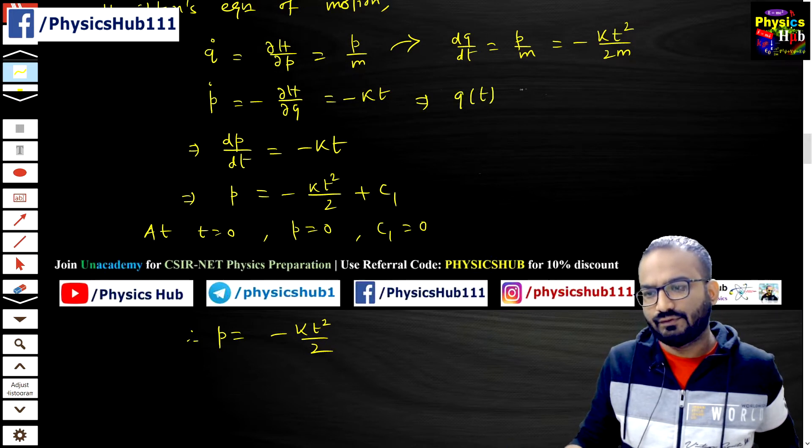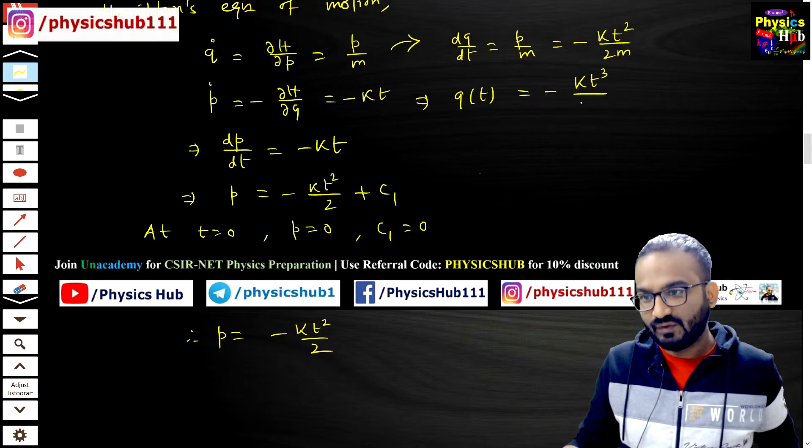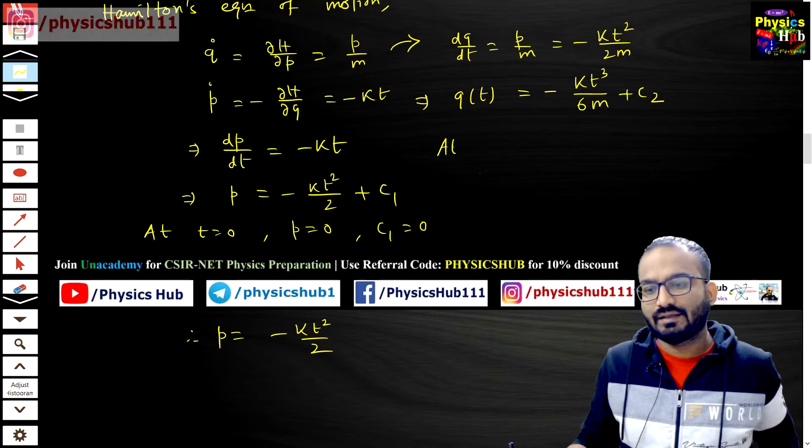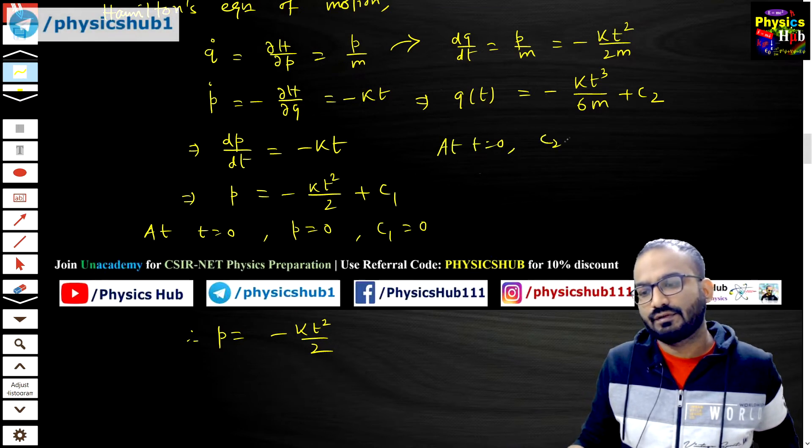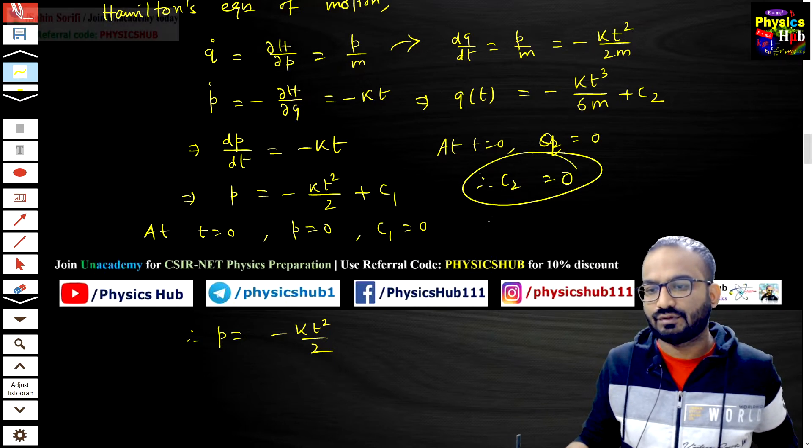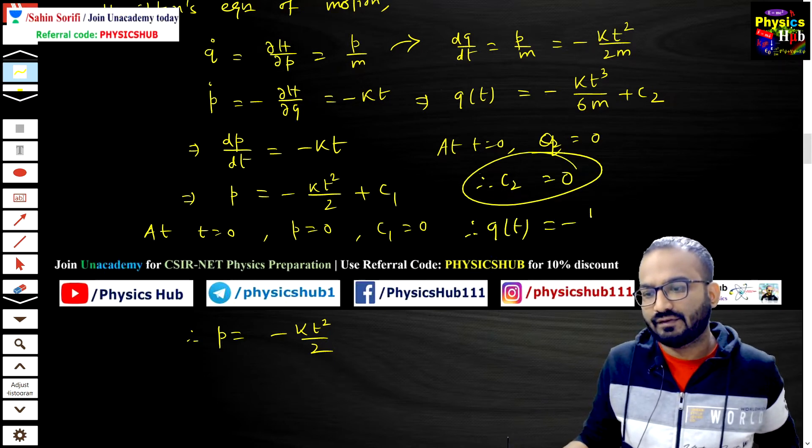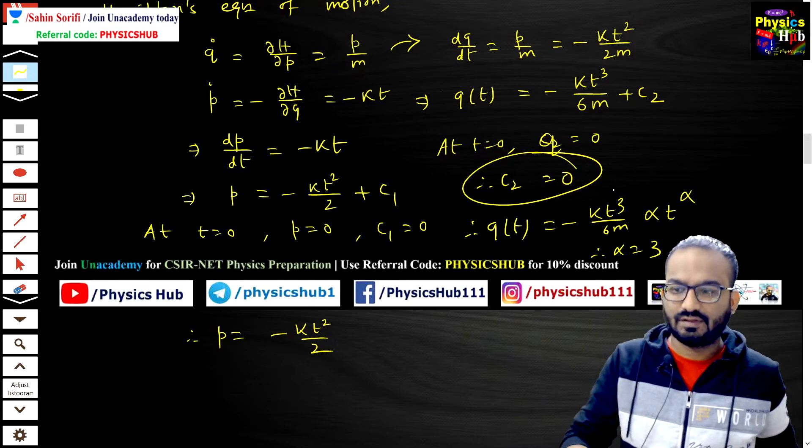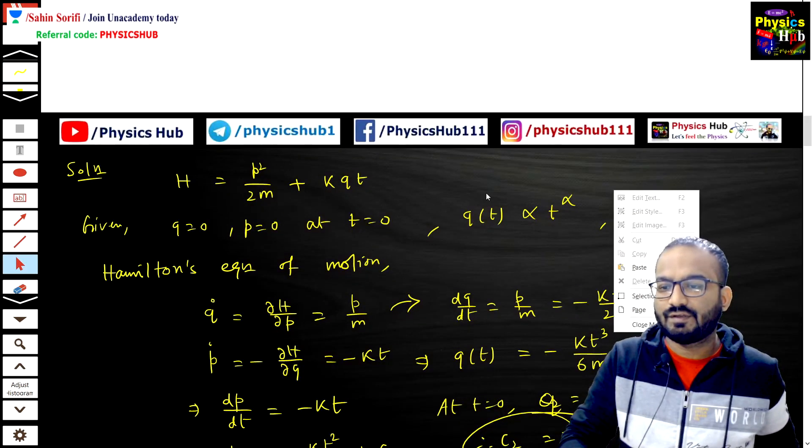From here we can find out the value of q of t equals minus k t cubed by 6m plus some integration constant c2. Now at t equals 0, q equals 0, so c2 is also zero. Ultimately we are getting q of t equals minus kt cubed by 6m. It is proportional to t to the alpha, so alpha as you can see is three. It is matching with option B.